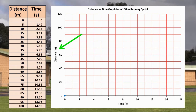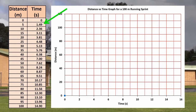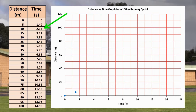A distance versus time graph shows distance on the y-axis, in this case in metres, and time on the x-axis, in this case in seconds. The first 5 metres took 1.49 seconds to complete, so we can put a dot at that point. I crossed the 10 metre mark after 2.36 seconds, so the next dot goes here. Repeating the procedure gives us a series of dots.